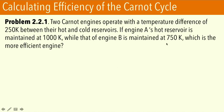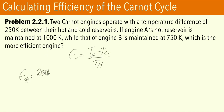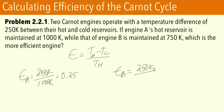Let's look at this problem dealing with two different Carnot engines which operate at a temperature difference of 250 Kelvin. Engine A has a hot reservoir maintained at 1000 Kelvin, while engine B is maintained at 750 Kelvin. We want to know which is the more efficient engine. Since we're dealing with Carnot engines, we use η = (T_H − T_C)/T_H. For engine A: 250/1000 = 0.25. For engine B: 250/750 = 0.33. So engine B is more efficient.